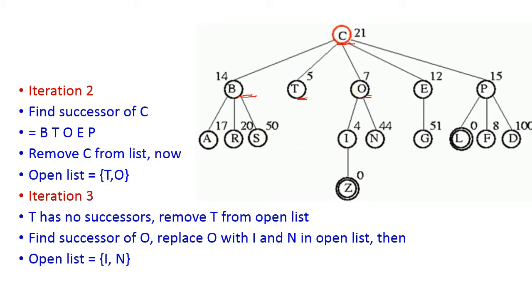The successors of C are B, T, O, E, and P. Among all these successors, T and O have the minimum heuristic values. Therefore, we remove C from the open list and add T and O. The open list now contains T and O. This completes iteration 2.